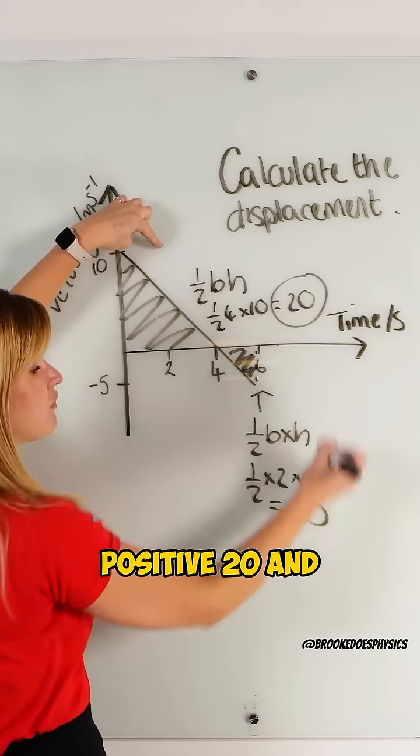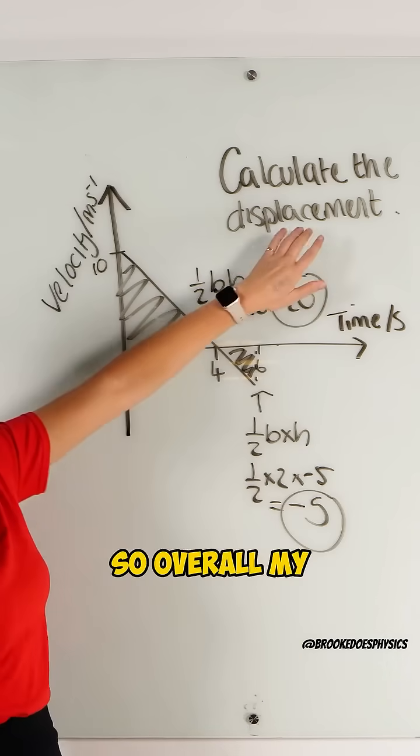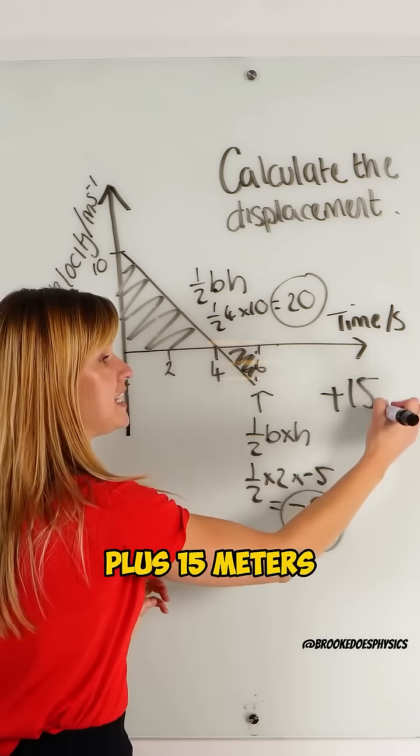So I've got positive 20 and I've got negative 5. So overall my displacement is going to be plus 15 meters.